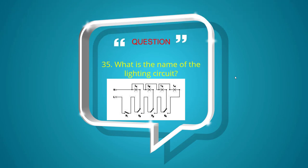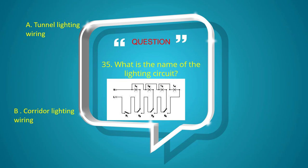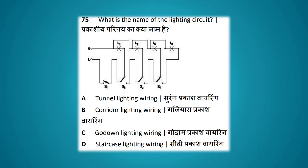What is the name of the lighting circuit shown? Options: tunnel lighting circuit, corridor lighting circuit, corridor lighting wiring, godown lighting wiring, staircase lighting wiring. The answer is godown lighting wiring.